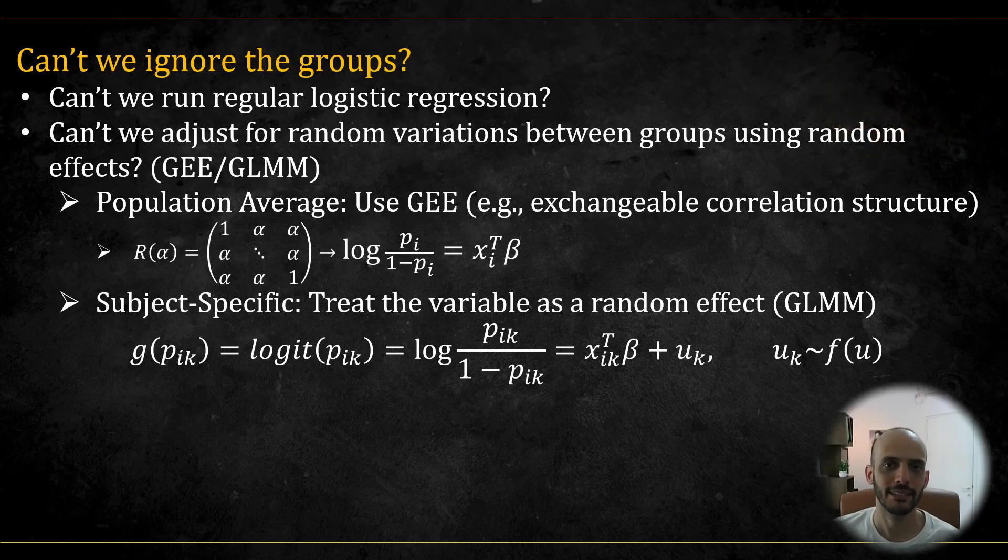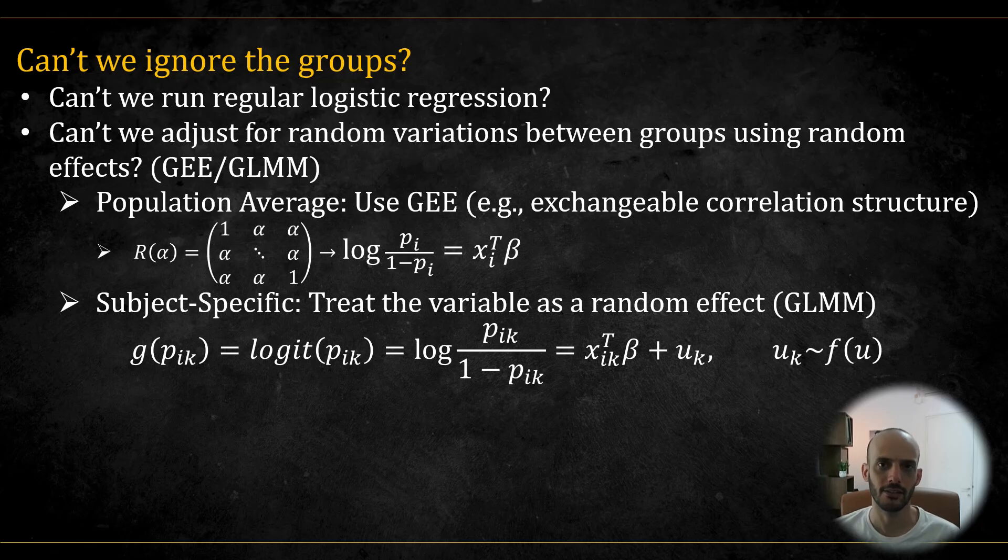One question you might be asking yourself is why should we even care about the groups? Can't we just ignore the grouping and run a regular logistic regression, a marginal model that doesn't account for the different groups? And maybe you're telling yourself we can account for the grouping but maybe using some method like GEE or GLMM. And if you are not familiar with these methods you can check out my videos on them. I will link them in the description below.